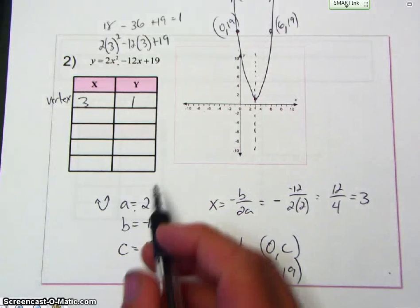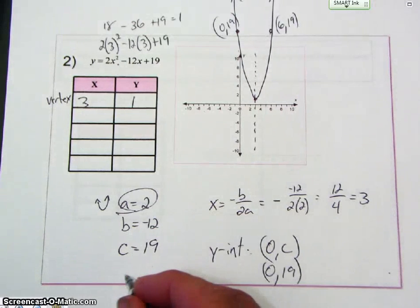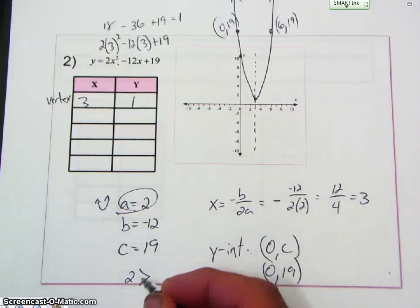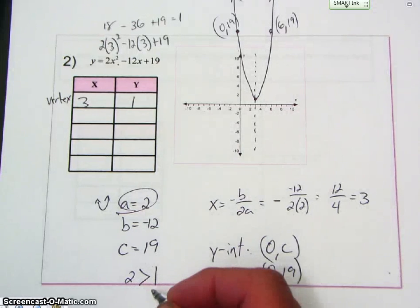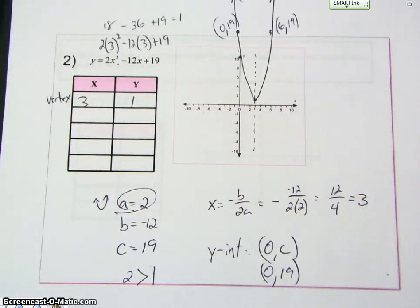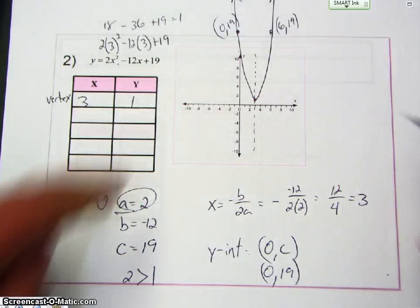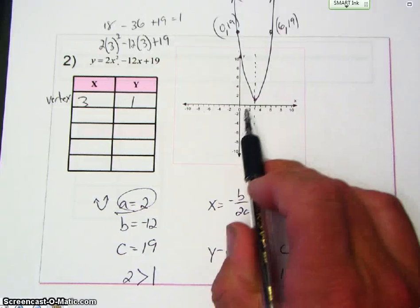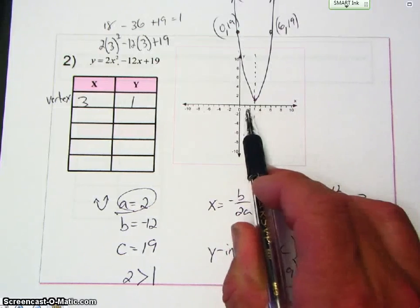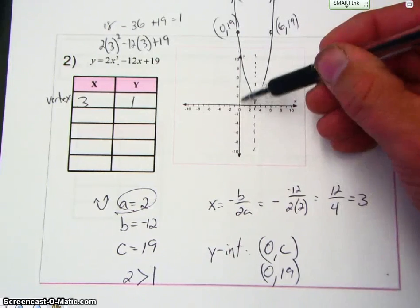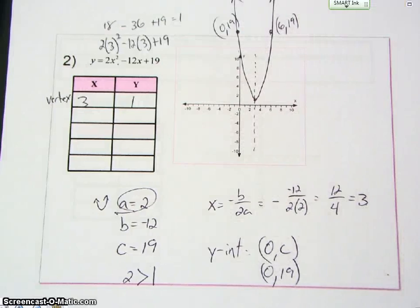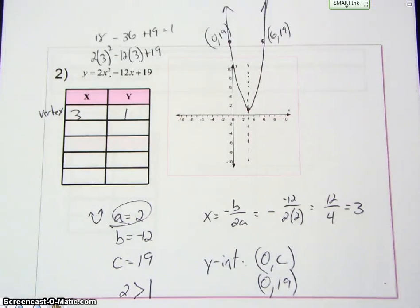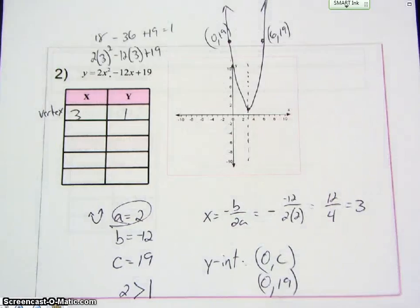Now you notice here a, which is 2, is greater than 1. So my parabola should be wider. But you notice my scale goes in increments of 1 while this goes in increments of 2. So therefore, it doesn't look like my graph is getting wider. Let's look at another example.